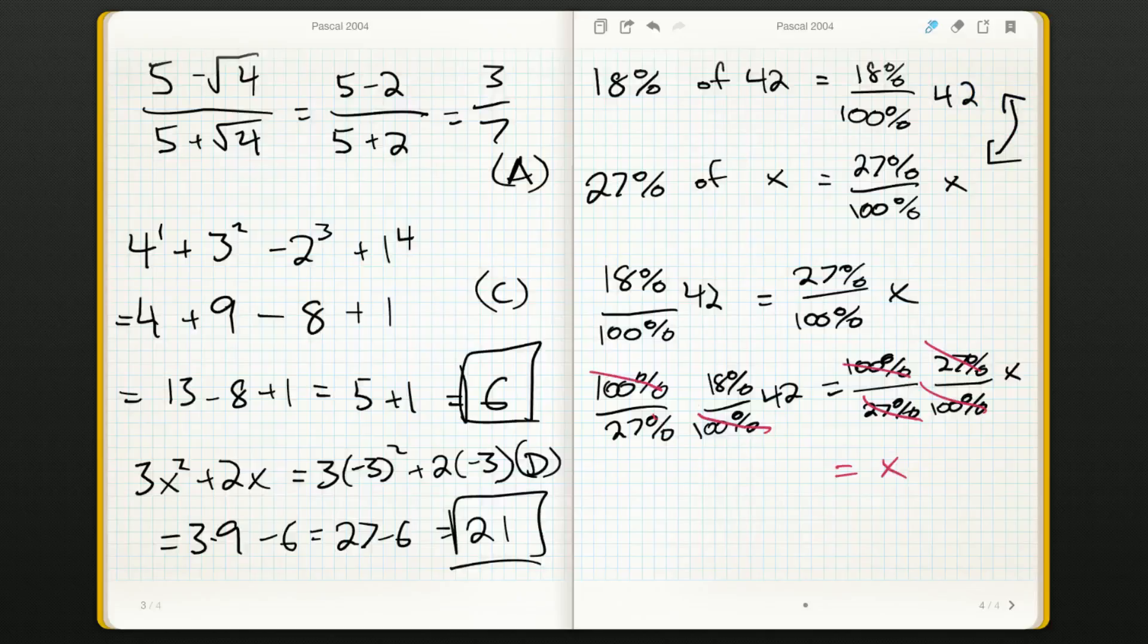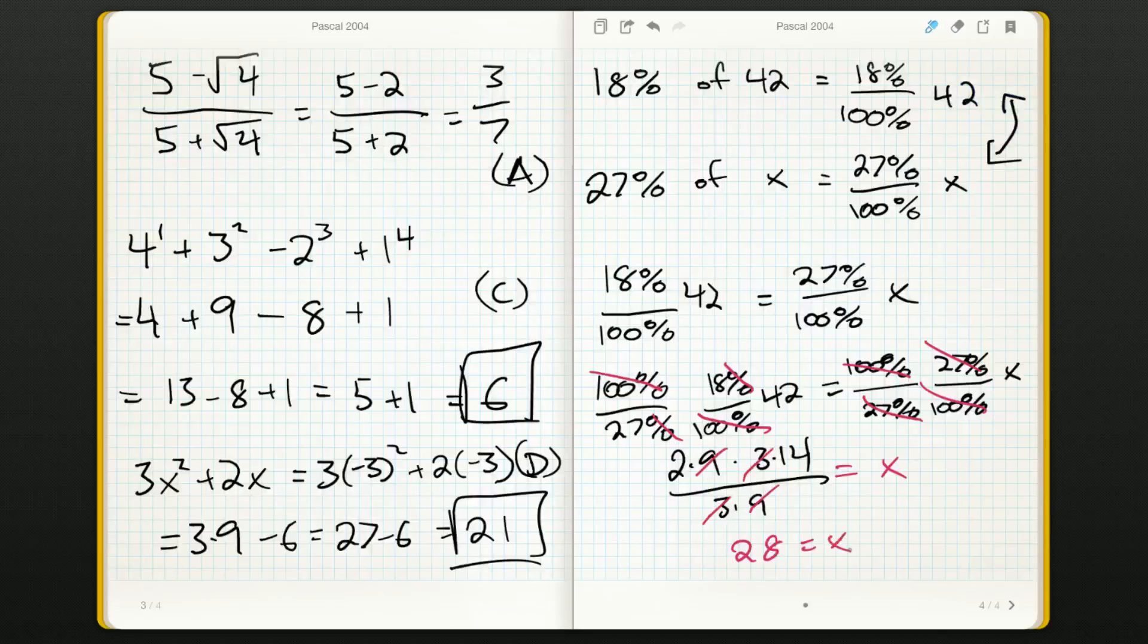So we have these hundreds and percents cancel out, and 18 over 27 times 42. Now 18 is 2 times 9, and 42 is 3 times 14, all over 27 which is 3 times 9. I'm just writing this out so I don't have to grab my calculator. Cancel a bunch of this out and we should be left with 2 times 14 which is 28.